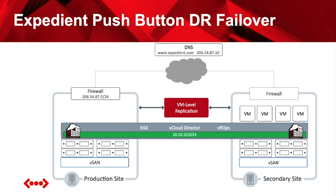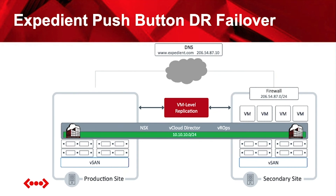Using Zerto's Virtual Protection Groups, applications can fail over independently — you don't have to fail over your full environment at once. Individual applications can fail over while others remain running on production, and everyone still thinks they're on a Layer 2 adjacent network. For a full site failure, we replicate the firewall along with VMs using Zerto, transmitting the public IP addresses to the secondary side. Instead of 8 to 12 hours of DNS propagation, we do a 3 to 5 minute BGP re-announcement so all user-facing URLs stay the same and users get near-immediate access back to their applications.